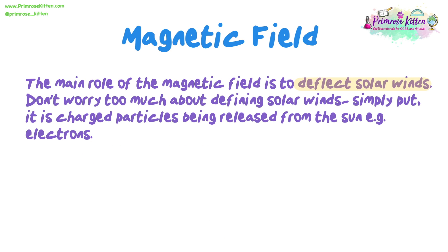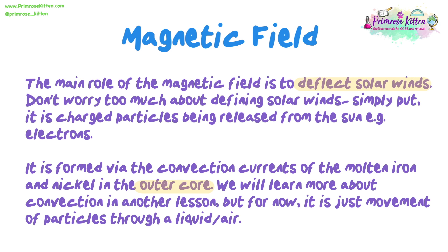The main role of the magnetic field is to deflect solar winds. Simply put, solar winds are charged particles being released from the sun, for example electrons. The magnetic field is formed via the convection currents of the molten iron and nickel in the outer core. We will learn more about convection in another lesson, but for now it is just movement of particles through a liquid or air.